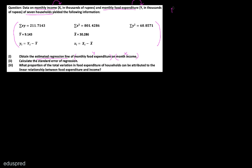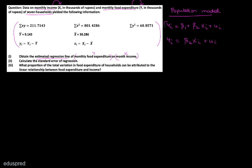Before we talk about the estimated regression line, let's discuss what the population model is going to be in this case. We are regressing Y on X, and there are two possibilities. The first possibility is Yi equal to beta 1 plus beta 2 Xi plus Ui. The second possibility is Yi equal to beta 2 Xi plus Ui. The only difference is that in the first model we have the intercept term beta 1, and in the second model we do not have the intercept term.